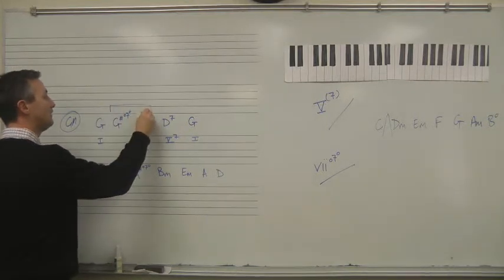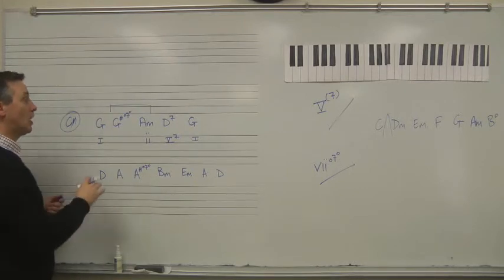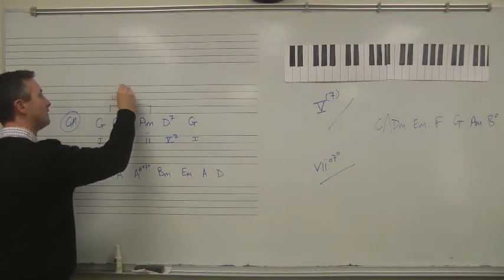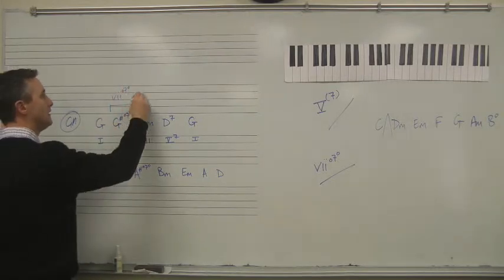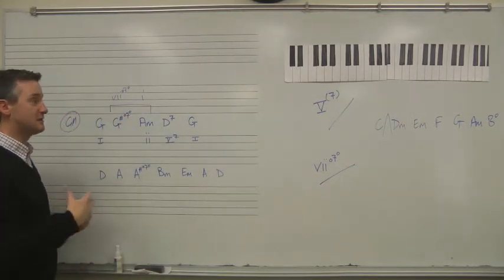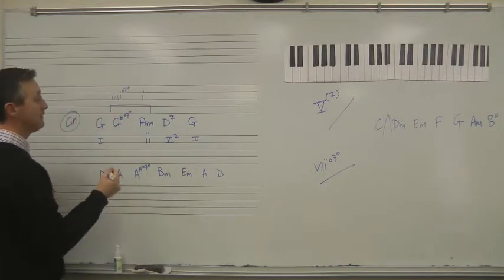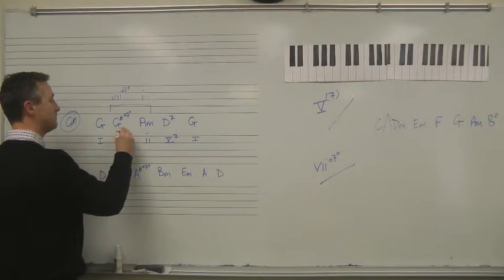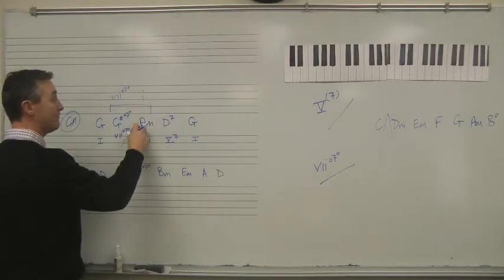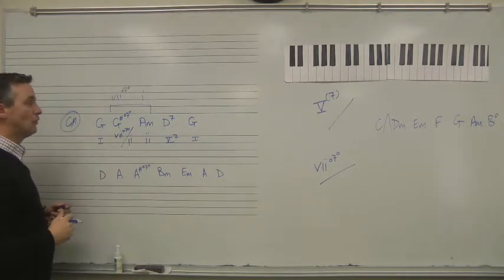If you were in A minor, then G sharp would be your 7, and G sharp fully diminished 7 would be a 7 to 1 in A minor. And because you can have a 7 to 1, it's substituting the VII chord for the V chord, it works like a dominant, then you can do the same with secondary dominance. And this becomes a 7, fully diminished 7 of not 1, but whatever A minor is in the key, which is 2. So, a fully diminished 7 of 2.